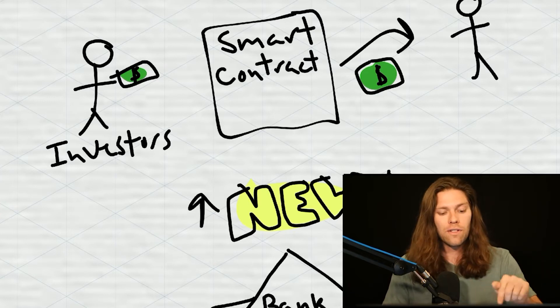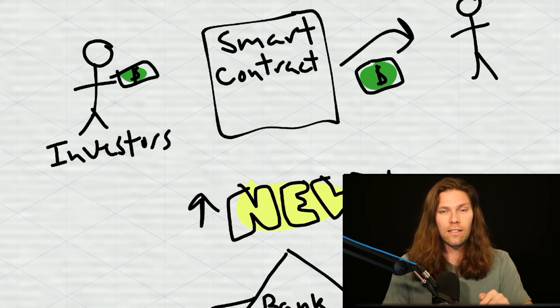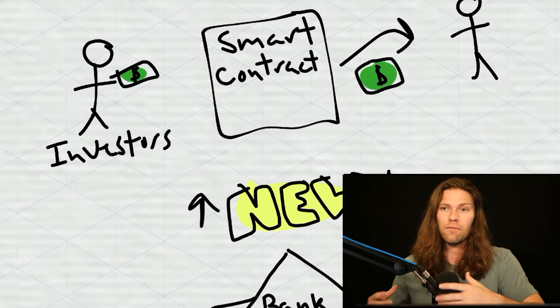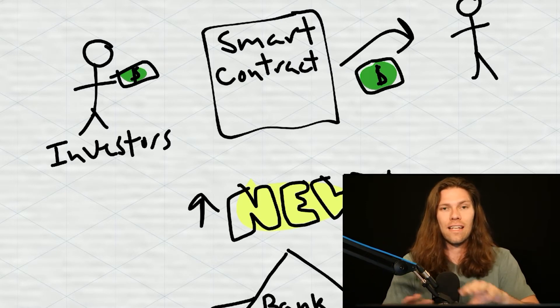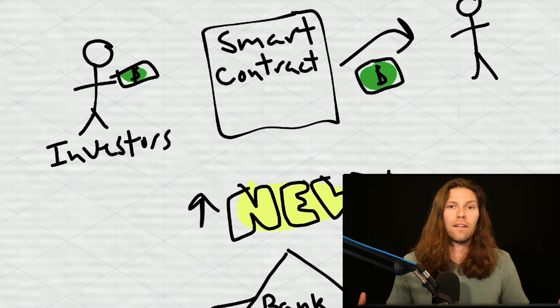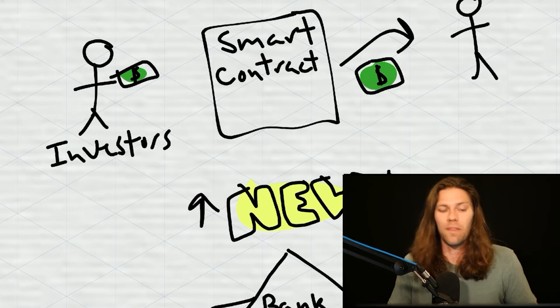So you have investors who pay money into smart contracts. That smart contract then pays money to someone who is looking to lend money to grow their business, to buy a car, for whatever. And there's a predetermined set interest rate. That person pays money back into the smart contract. The investor gets paid. Everyone comes out happier except the bank.